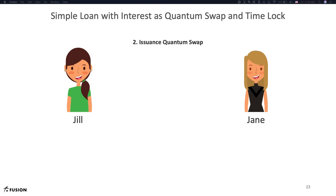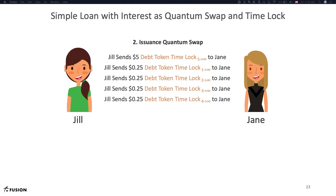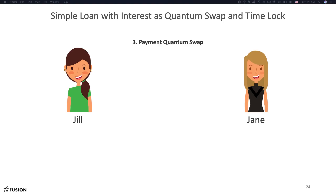For the issuance quantum swap, each of the time-locked debt tokens must be sent to Jane, in return for the five dollars cash token from Jill. So Jill sends five dollars of debt token time-locked from five days to forever, and all the subsequent 25 cent time-locked debt tokens representing the interest. In return, Jill receives five dollars of cash token from Jane. To emphasize: upon loan initiation, Jill sends a collection of time-locked debt tokens totaling six dollars and twenty-five cents, and in return Jane sends Jill the five dollars of cash token. For the payment quantum swap, the ratio of debt token without time lock received in exchange for cash token will be one-to-one. In this manner, Jane receives six dollars and twenty-five cents for the five dollars she lent, with the extra one dollar twenty-five cents representing the interest earned.